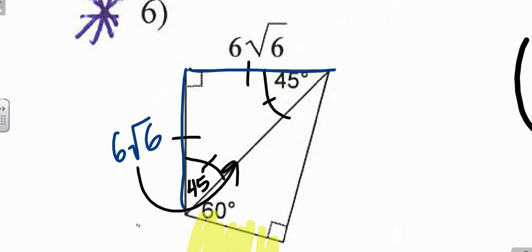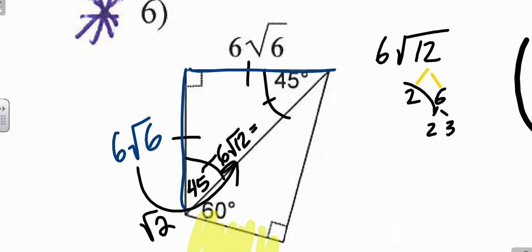Going this way, times by root 2. Now be very careful, you're going to end up with 6 root 12, but that's not exactly the case, because 6 root 12, you need to factor that 12 out. I have a pair of 2s. The 2s are going to come out, so 6 root 12 becomes 12 root 3. That's important that you factor that out whenever possible.